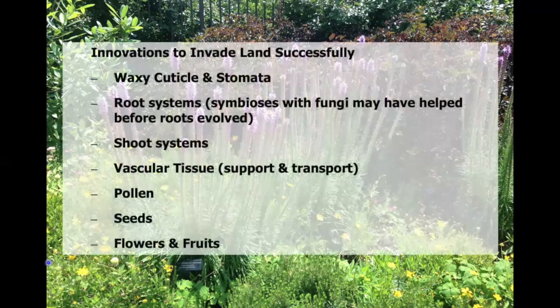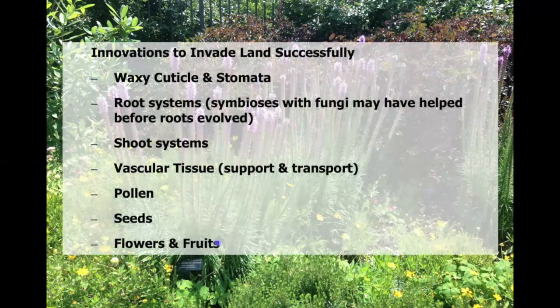We'll start by reminding ourselves of some of the key innovations that we talked about last time regarding plants' evolution and invasion of land — cuticles, stomata, roots, shoots, vascular tissue, and all of those things. But when we get into the angiosperms, what really becomes important is thinking about the evolution of flowers and fruits, as well as changes that occurred in evolution of the seeds.